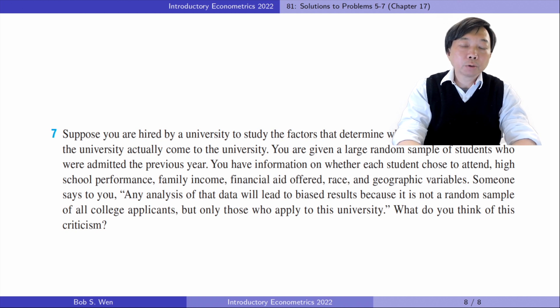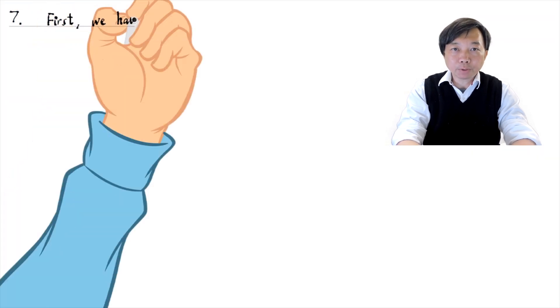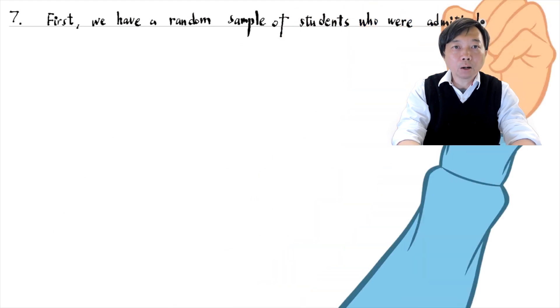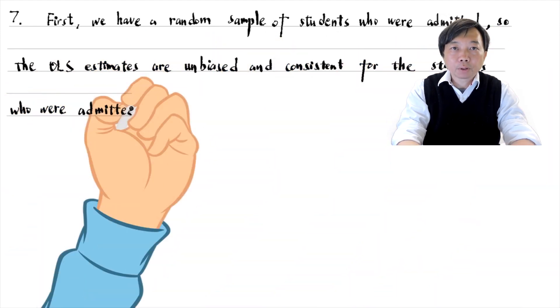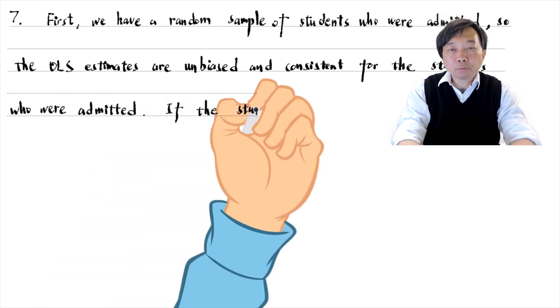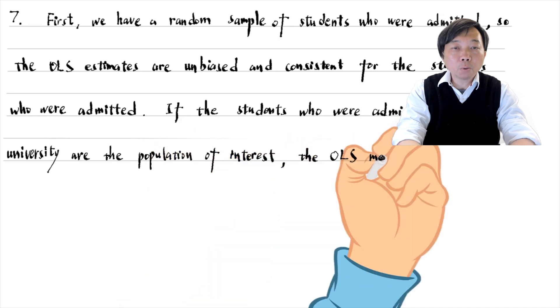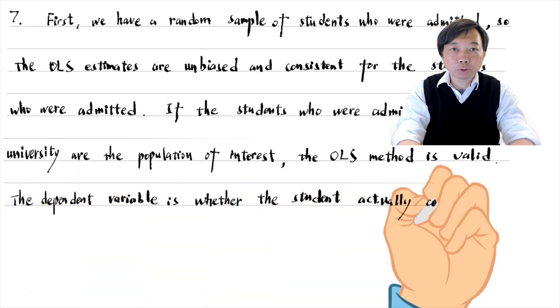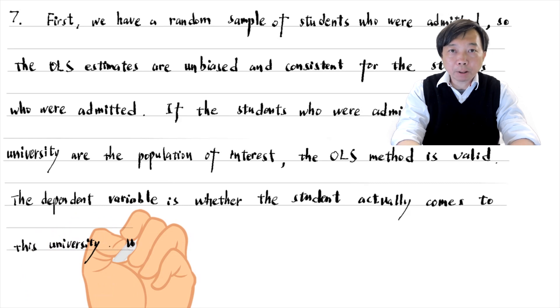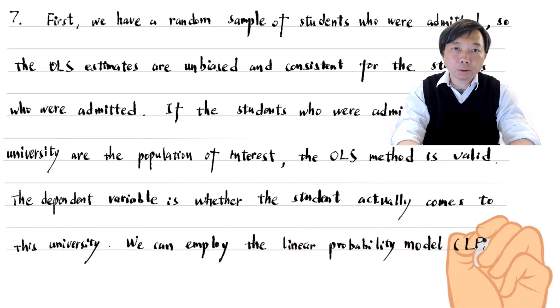We should have three groups of students in mind. The students who are admitted. The students who applied to this university. And the students who applied to any universities. First, we have a random sample of students who were admitted. So the OLS estimates are unbiased and consistent for the students who were admitted. If the students who were admitted to this university are the population of interest, the OLS method is valid. The dependent variable is whether the students actually come to this university. We can employ the linear probability model, the probit model or the logit model.